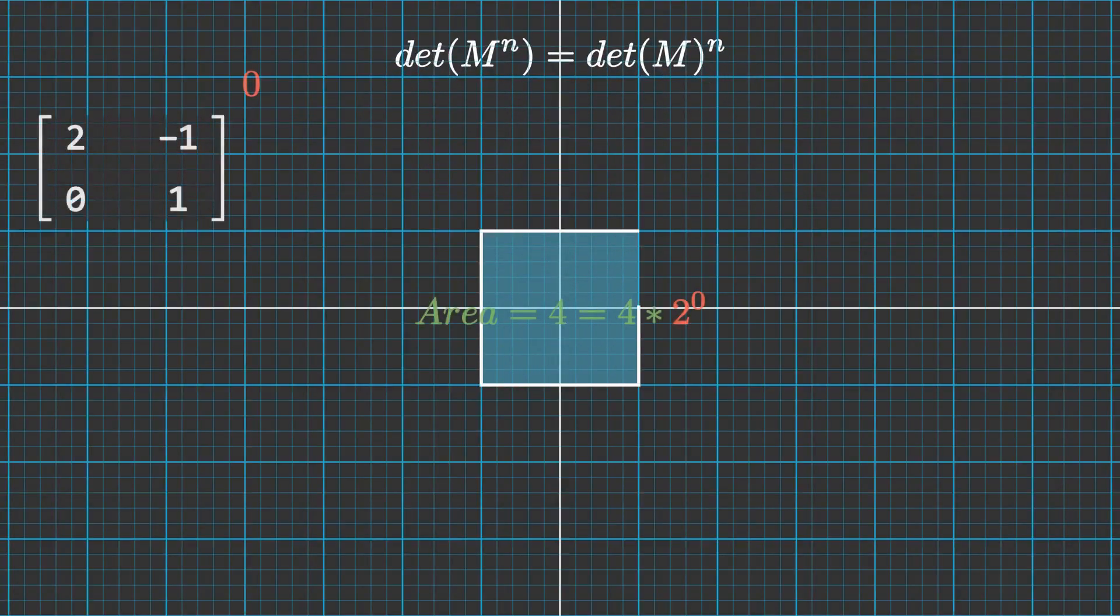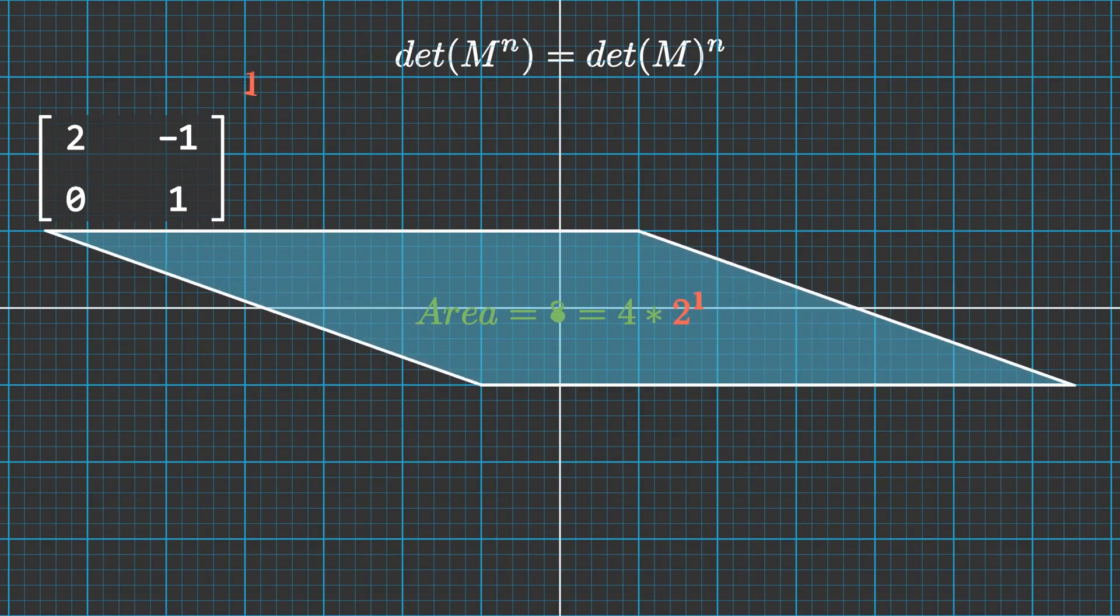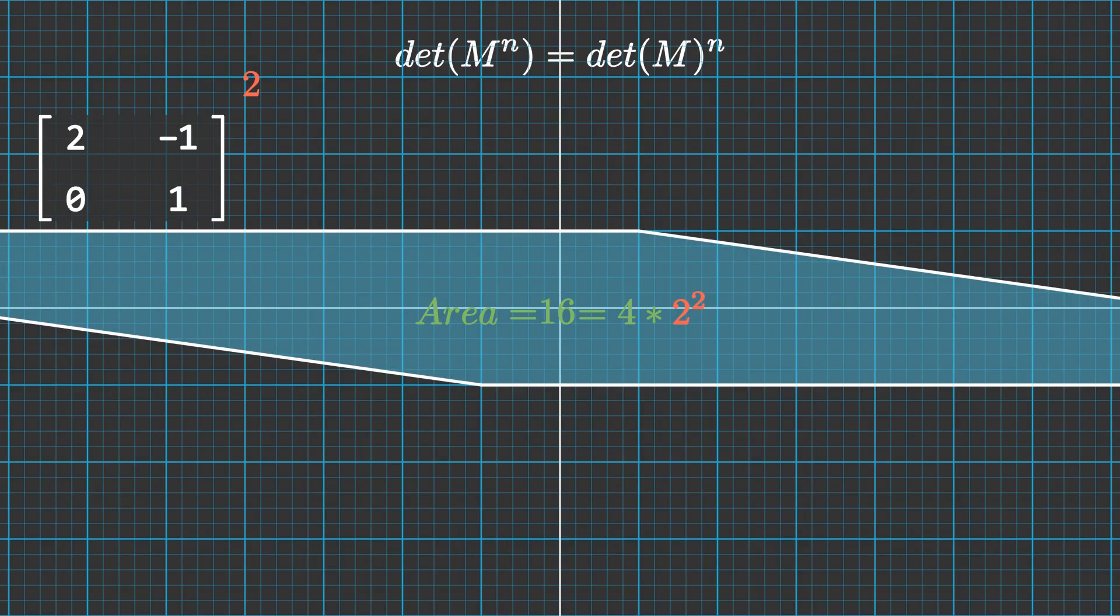Intuitively this makes sense, as the determinant of a matrix basically describes what happens to areas of shape under a transform. And if you apply a transform n times, the shape's area will be multiplied by that determinant n times. However, if you want a concrete proof, here is an inductive proof.